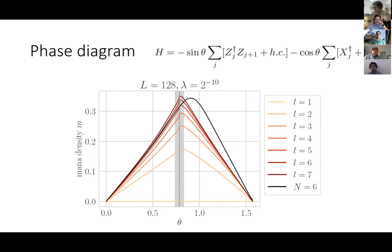Additionally, depending on how we estimate it with different subsystems, as we increase the subsystem the mana density keeps going up. That means it's not just a strictly localized product state — there's actually some entanglement having to do with the way the mana is distributed.